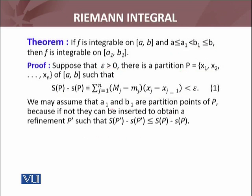We may assume that a1 and b1 are partition points of P. If not, if they are not partition points, then we can define a refinement of P such that a1 and b1 are partition points of that new refinement partition.